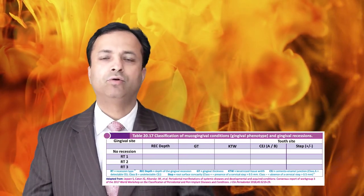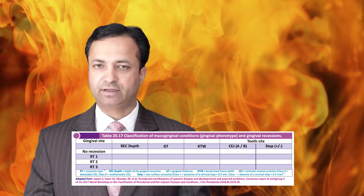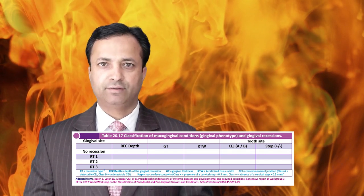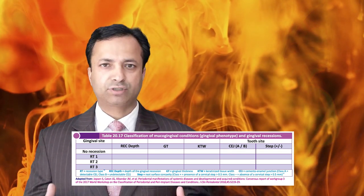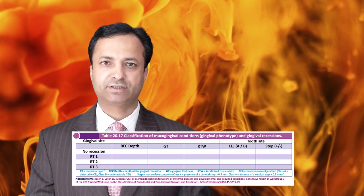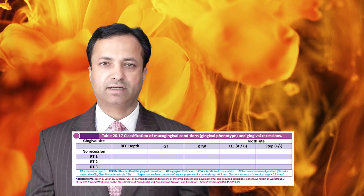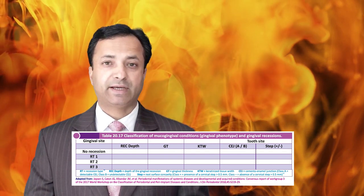Coming to muco-gingival deformities and recession — the most common muco-gingival deformity seen in clinical practice is recession. As this is a clinically oriented classification system, muco-gingival deformities have been classified using five parameters. The first is recession, where the Cairo classification has been used, classifying recession as RT1, RT2, or RT3. This was done keeping in mind the drawbacks of Miller's classification system.